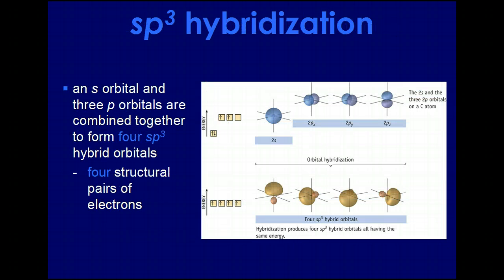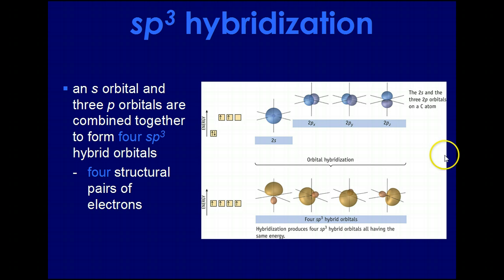With sp3 hybridization, this involves four pairs of electrons — four pairs that can come from bonded pairs or lone electron pairs. Since you have eight electrons involved, you need four orbitals to store those electrons in. We take the s orbital and three p orbitals and combine them together to make a mushroom-like shape, and that's how we get our tetrahedral geometry.